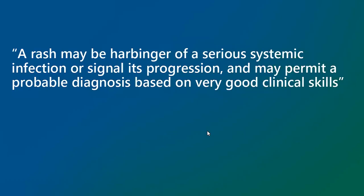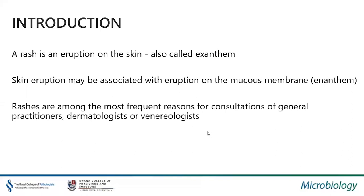A rash may be a harbinger of a serious systemic infection or signal the progression of a systemic infection. Good clinical skills may assist in a probable diagnosis. A rash is an eruption on the skin called exanthem. Many a time this eruption may be associated with a similar eruption on the mucous membrane, described as enanthem. Rashes are among the most frequent reasons for consultations of a general practitioner, a dermatologist, or a venereologist in the clinical setting. Some of these may be, as I said earlier, a harbinger of a very serious underlying condition that may be life-threatening.